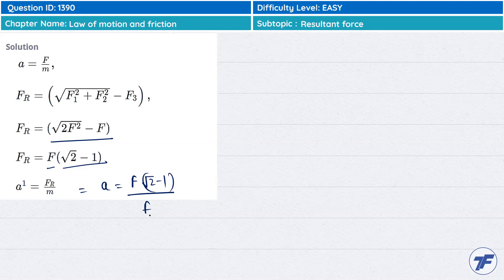Sorry children, acceleration is f by m. So we need to find acceleration a prime, so f by m will become... This way we solve, so this will become a prime equals...